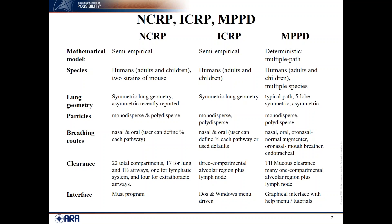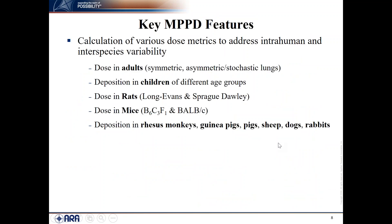MPPD has TB clearance models for the TB region, and for the alveolar region it has an ICRP-type compartment attached to each terminal bronchiole — so if you have 50,000 terminal bronchioles, you would have 50,000 alveolar clearance compartments. One of the major strengths of MPPD is its graphical user interface with a help menu and tutorial, which allows users to get up to speed quickly and run the model.